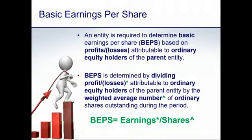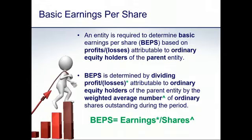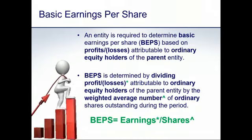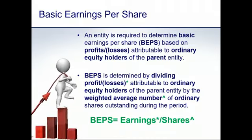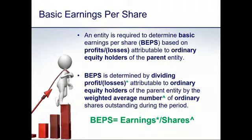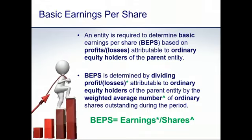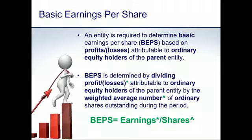Basic earnings per share is determined by dividing the profit or loss attributable to ordinary equity holders of the parent by the weighted average number of ordinary shares outstanding during the period. That is the basic formula: earnings divided by shares. The earnings refer to a specific segment of earnings, and shares refers to the weighted average number of ordinary shares. We'll explore each component in more detail.